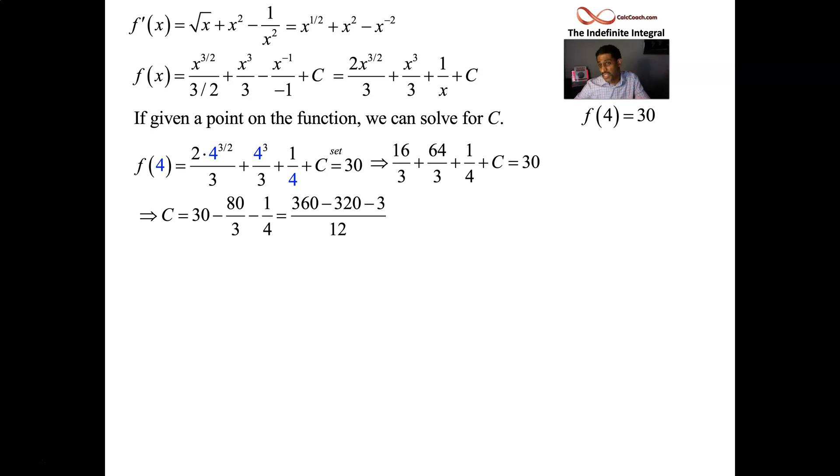The last one's over 4. So times by 3. 3 over 12. 360 minus 320. That's 40. 40 minus 3. Not the best number to deal with. But that's okay. Here we have it.